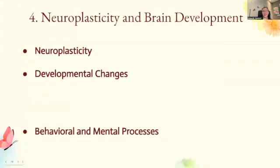Neuroplasticity refers to the brain's ability to reorganize itself by forming new neural connections throughout life in response to experience, learning, and injury — those firings of neurons we discussed in 1.3. The brain also undergoes significant developmental changes, with different regions maturing at different rates, which influences cognitive abilities, emotional regulation, and social behaviors across the lifespan. Neuroplasticity allows for adaptive changes in response to environmental demands, and brain development influences our learning abilities, language acquisition, social skills development, and resilience to stress.